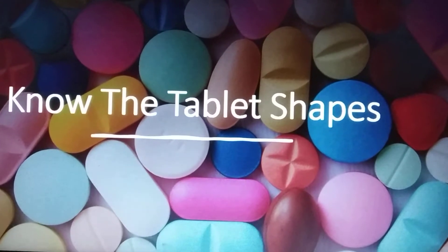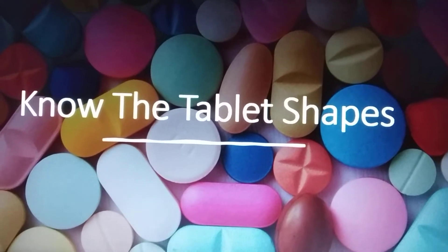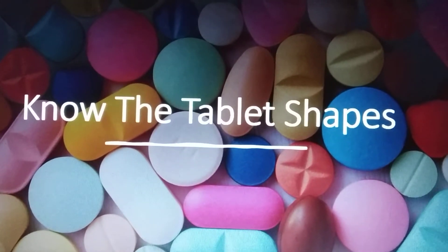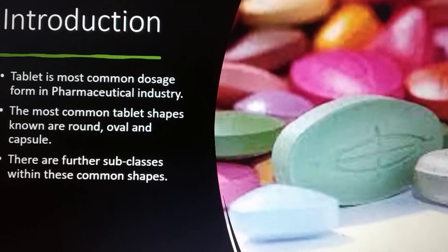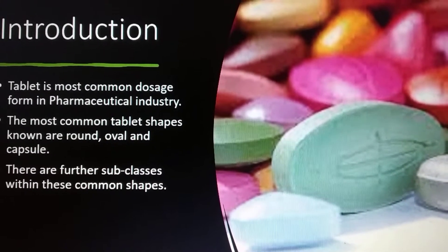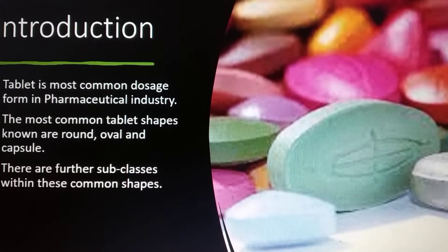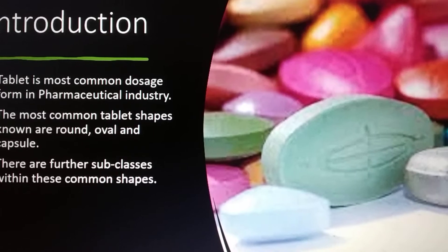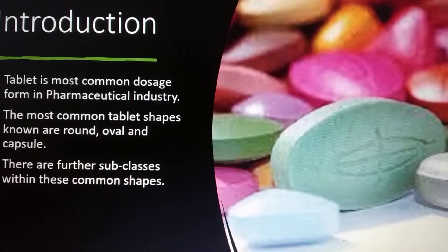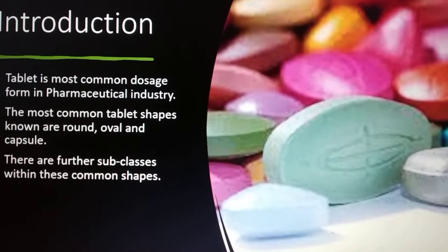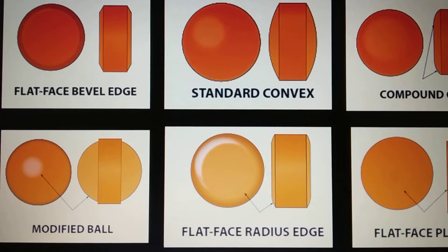Welcome back friends. In this video we are going to learn more about tablet shapes. As you must know, tablets are the most common dosage form in the pharmaceutical industry. The most common tablet shapes known to people are round tablets, oval tablets, and capsule-shaped tablets. However, there are subclasses within these common shapes, so we are going to understand what those shapes are.